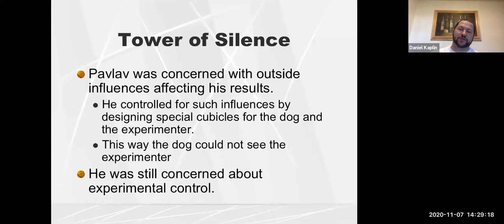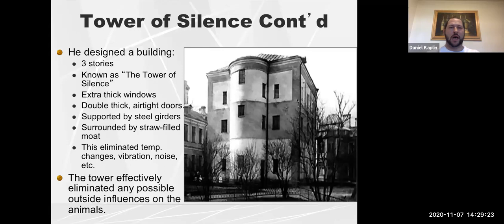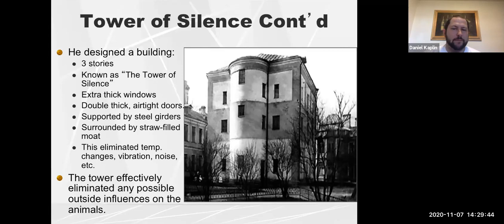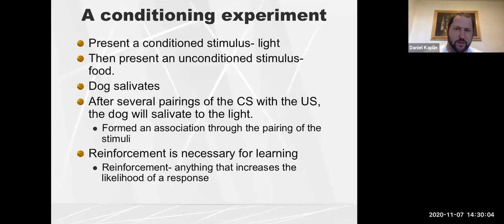The Tower of Silence was a three-story building with extra-thick windows, airtight doors, steel girders, and a straw-filled moat — all designed to eliminate any extra sensory stimulation whether from temperature, sound, touch, or vibration. This allowed Pavlov to rigorously control the experimental environment.